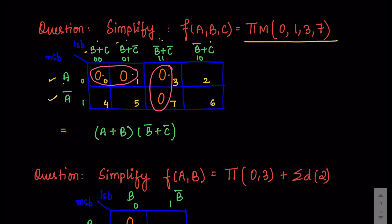When writing answers for POS you write them in the form of products of sums. So 00 is represented as B plus C, 01 as B plus C-bar, 11 as B-bar plus C-bar, and 10 as B-bar plus C. All other grouping concepts remain the same. Two groups of two are identified, and the common term for the first group is B-bar plus C-bar. For the second group the common terms are A and B, giving A plus B. The final answer is (A plus B) dot (B-bar plus C-bar).